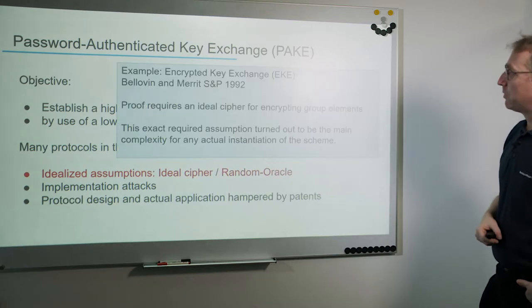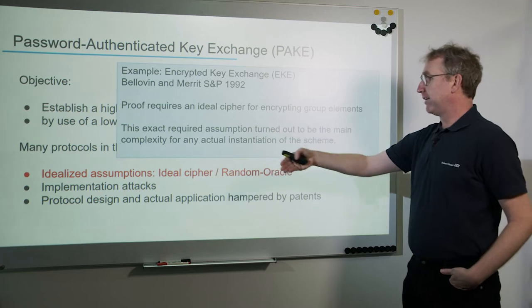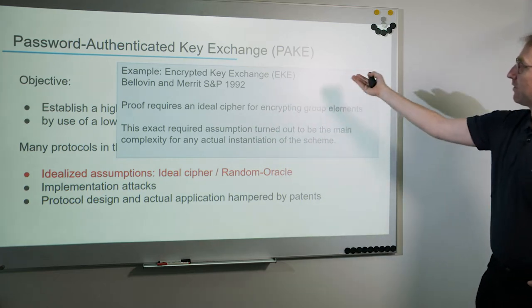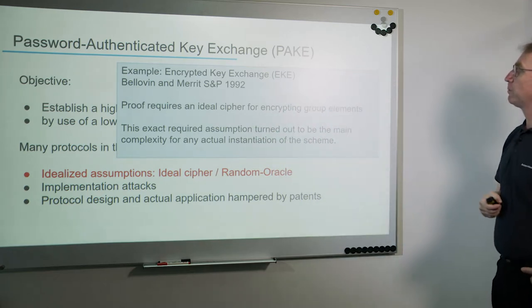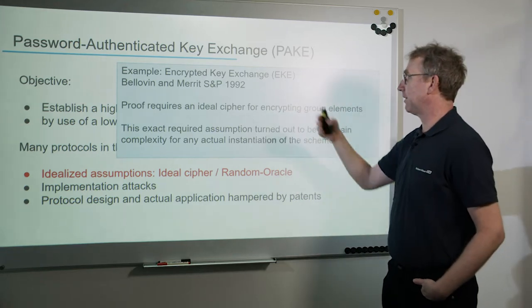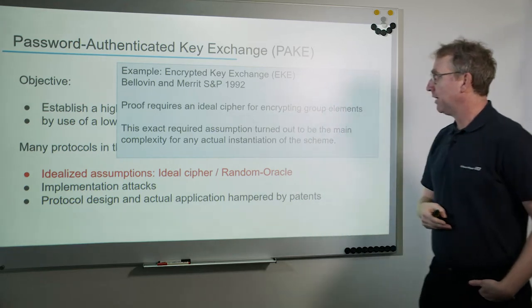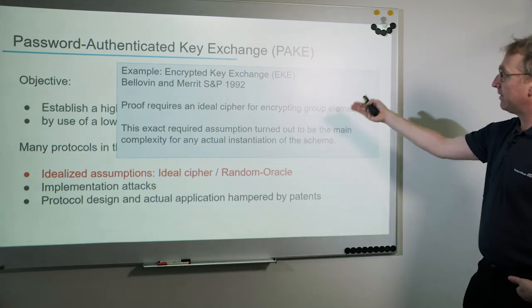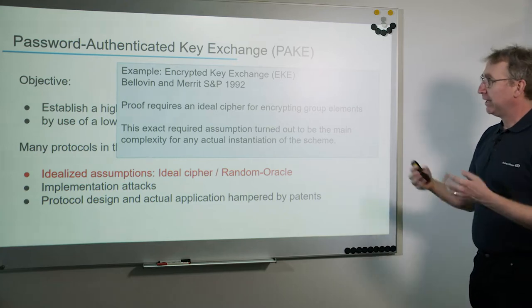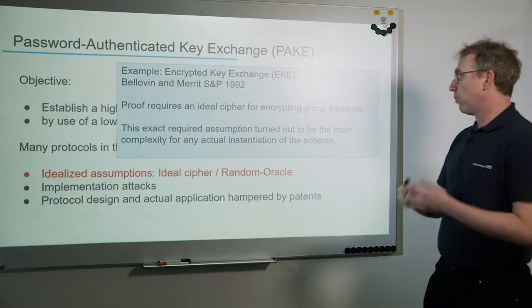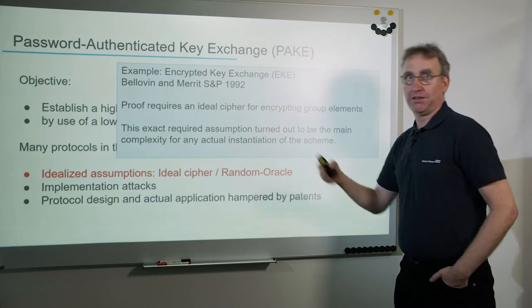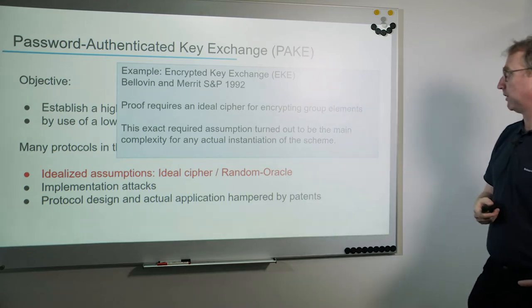An example where clearly understanding the assumptions is important is the encrypted key exchange protocol from Belevin and Merritt in 1992, where the proof required an ideal cipher for encrypting group elements. And this assumption was at the core of the difficulties for actually implementing this protocol securely.